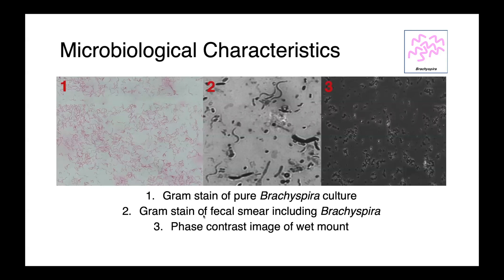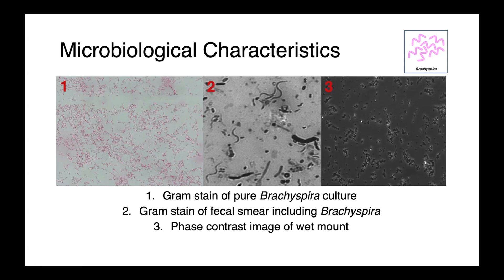In these three images, you can see some Brachyspira organisms. In the first picture, we have a gram stain of a pure culture showing gram-negative spirochetes. In the central image, we have a zoomed-in gram stain of a fecal smear containing Brachyspira among many different bacteria within the fecal microbial community. And on the right, we have an image taken using phase contrast microscopy, a technique used to visualize wet mounts and see the organisms squiggling around, making them really easy to identify.